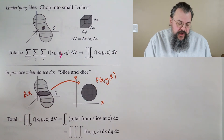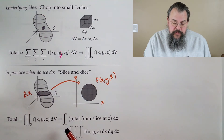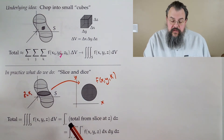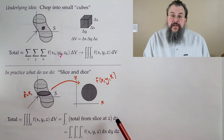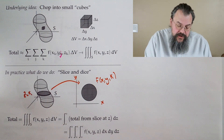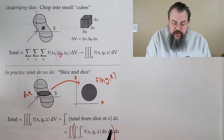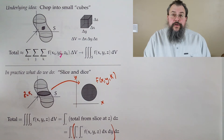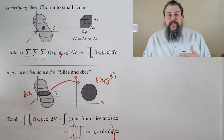So the idea: our integral over the solid of f dV will be from a lower bound to an upper bound, times dz. To get the contribution from that slice, we do a two-dimensional integral on the inside — integrating dx dy or dy dx in any order we want. That's the idea.